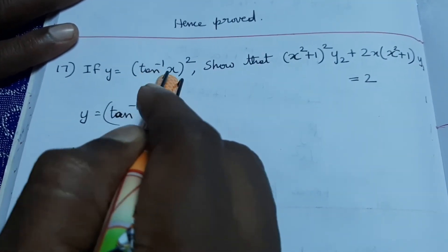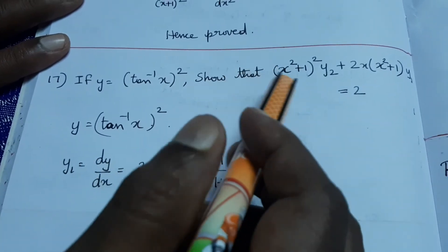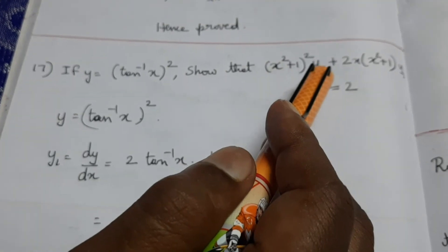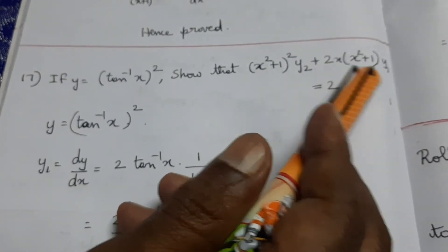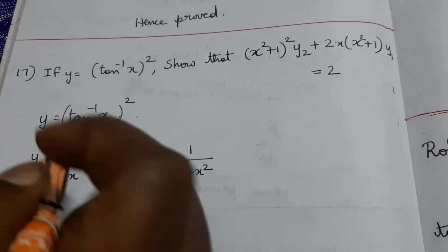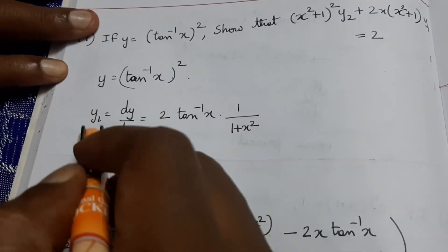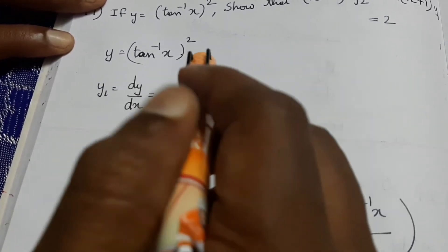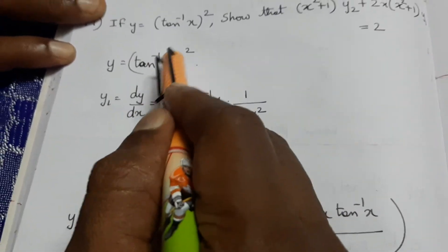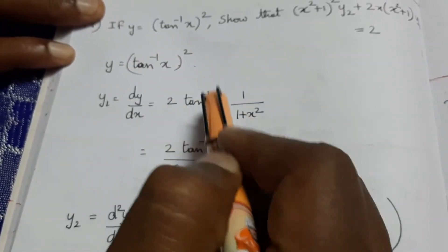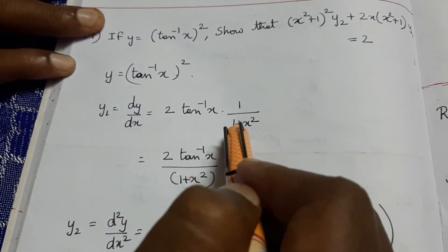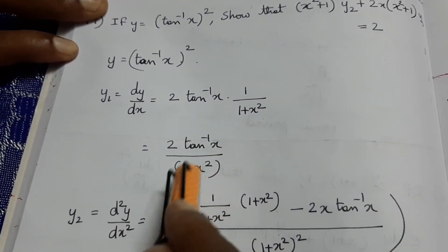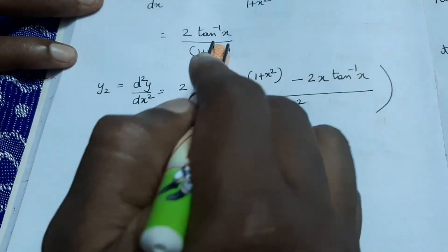Next: if y equals (tan⁻¹x)², show that (x²+1)² times y₂ plus 2x(x²+1) times y₁ equals 2. Here y₁ equals dy/dx equals 2·tan⁻¹(x) divided by 1 plus x square, which is 2·tan⁻¹(x) divided by (1+x²).